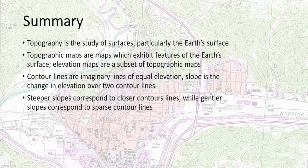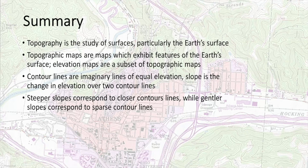To summarize: topography is a study of surfaces, particularly the Earth's surface. Topographic maps are maps which exhibit features of the Earth's surface. Elevation maps are a subset of topographic maps. Contour lines are imaginary lines of equal elevation. Slope is a change in elevation over two or more contour lines. Steeper slopes correspond to closer contour lines, while gentler slopes correspond to sparse contour lines.